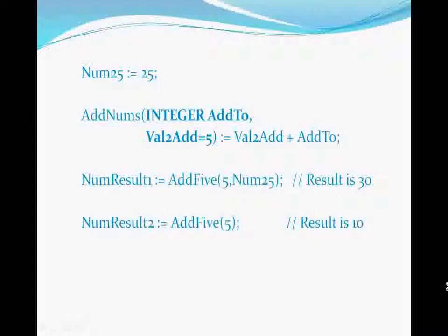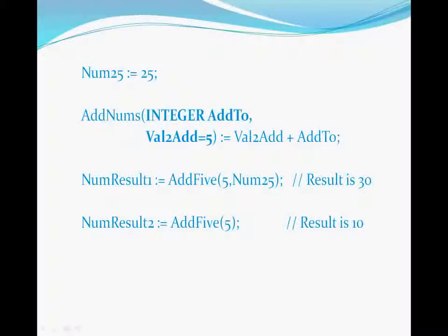In this example, the addNums function takes two parameters. The first is an integer named addTo with no default value, so it may not be omitted. The second parameter, named valToAdd, has no specified data type, so it defaults to the integer type. But it does have a default value specified — 5 — so it may be omitted. Therefore, in numResult1, with both parameters passed, the result is 30. But in numResult2, the second parameter is omitted, which defaults the valToAdd parameter to the value 5, producing 10.